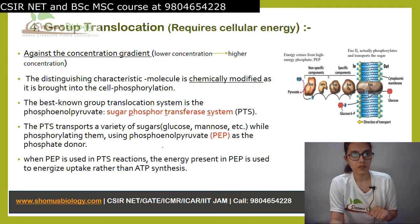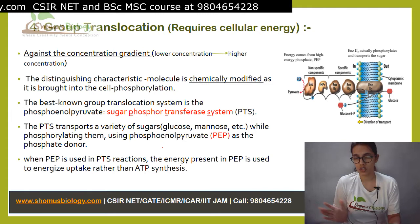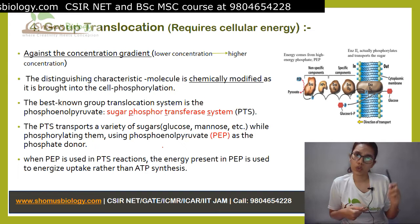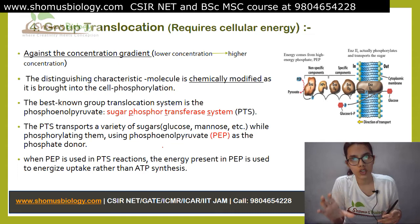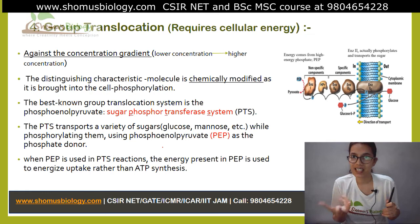The fourth mechanism is group translocation. Unlike the previous ones, where the molecule passes outside to inside without being modified, in group translocation the molecule is chemically modified as it enters the cell. It is still active transport — requiring cellular energy — going from lower to higher concentration. The distinguishing characteristic is that the molecule is chemically modified when brought into the cell, mainly by phosphorylation.